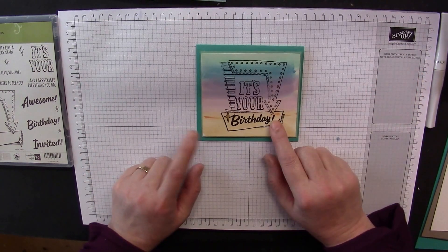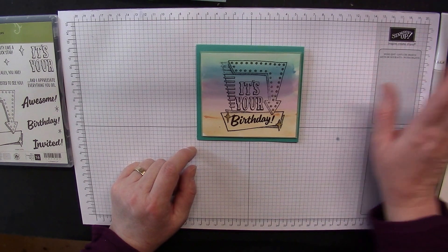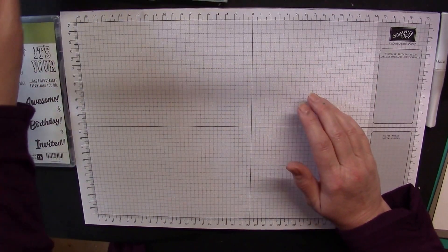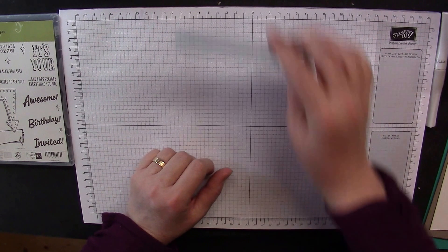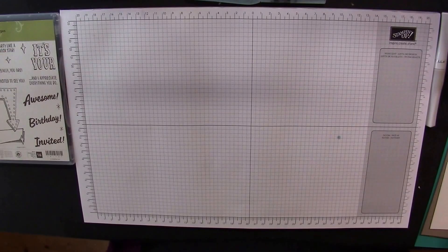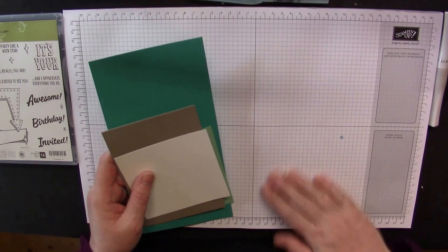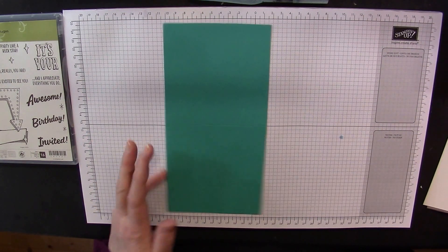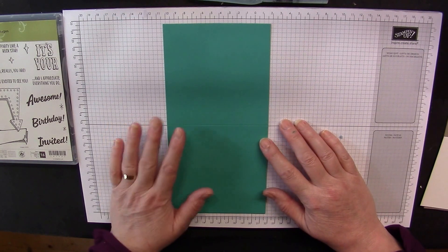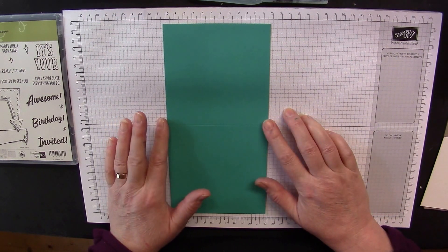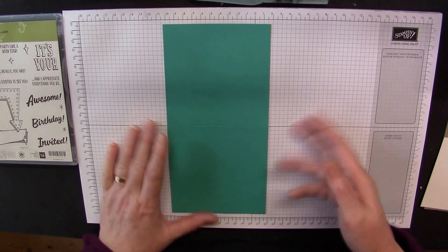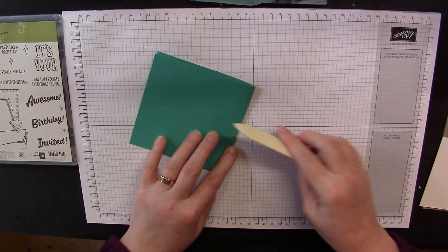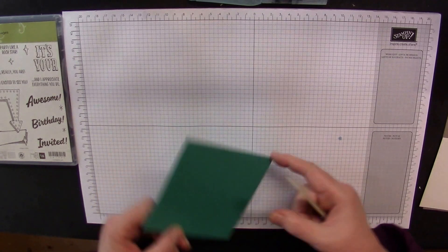Today we're doing a watercolor technique, and we are going to be using one of the new stamp sets. This is a sneak peek which is Marky Messages, and I am using all of the new ink colors as well. It's a double sneak peek of the stamp set and the ink pads. I'm going to tell you all the products that you need.